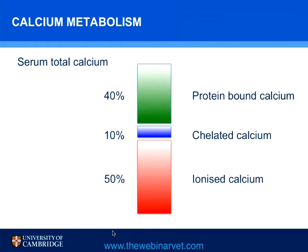Calcium in the blood is usually measured as total calcium. Total calcium includes the protein-bound calcium, which is not easily available for physiological use, and chelated calcium. The protein-bound and chelated calcium accounts for 50% of the total calcium. The ionized calcium, which is the physiologically active fraction, is the other 50% of the total in most instances.